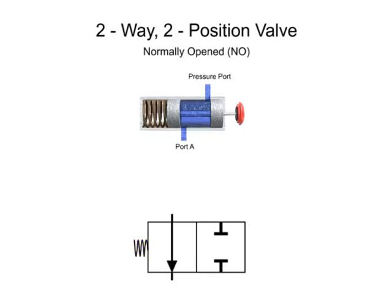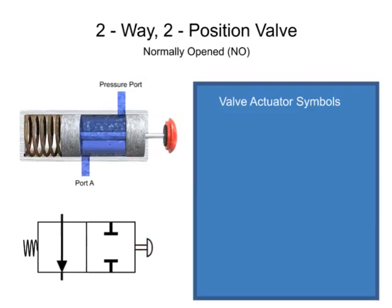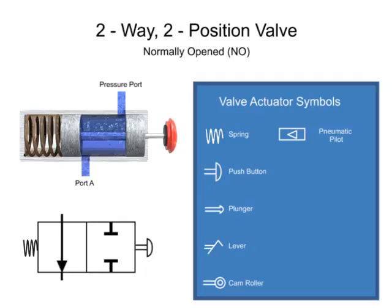Actuators used to change valve positions can be mechanical, pneumatic pilot, or electric solenoid. To complete the diagram, the primary actuator symbol is placed on the other end of the graphic symbol. In this case, the actuator is a push button. Mechanical actuators change valve positions with springs, push buttons, plungers, levers, and cam rollers. Pneumatic pilots change valve position with a pressurized air signal. Electric solenoids that change valve positions by directly moving the valve element are called direct solenoids. Electric solenoids that open small pilot valves and allow pressurized air to move the valve element are called solenoid controlled pilot operators.